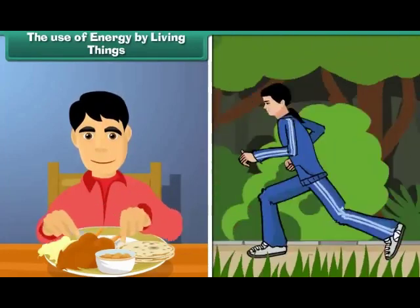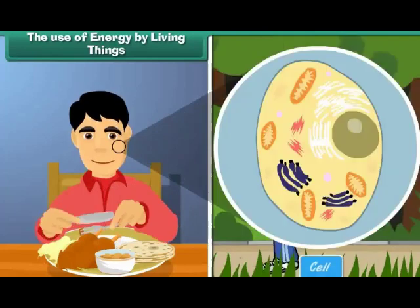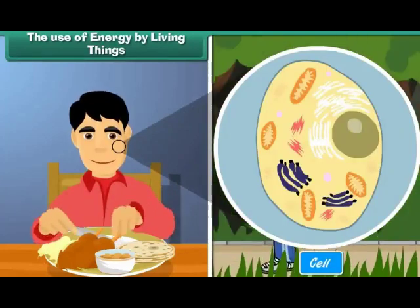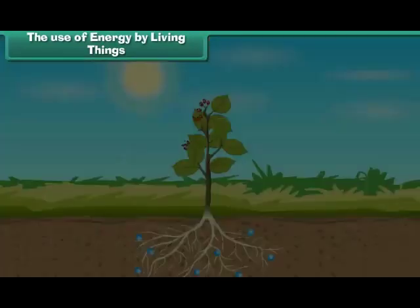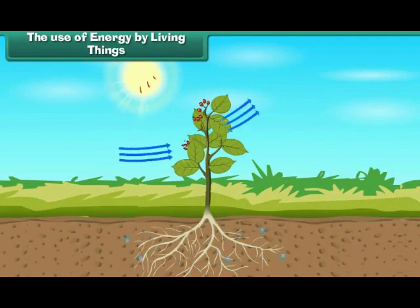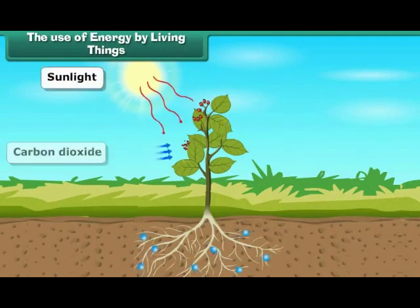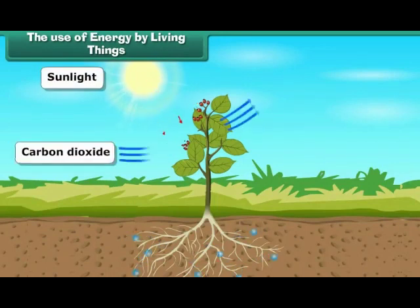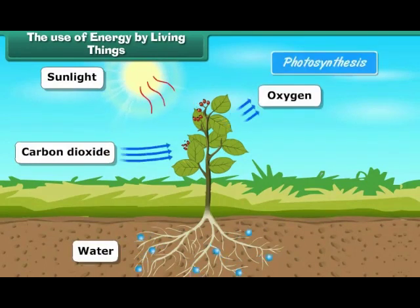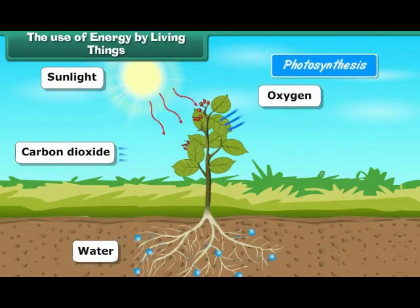The source of energy is food, which is required by every cell of the body. Food is prepared by plants through the process of photosynthesis. Plants require sunlight, carbon dioxide, water, and chlorophyll for the process of photosynthesis.